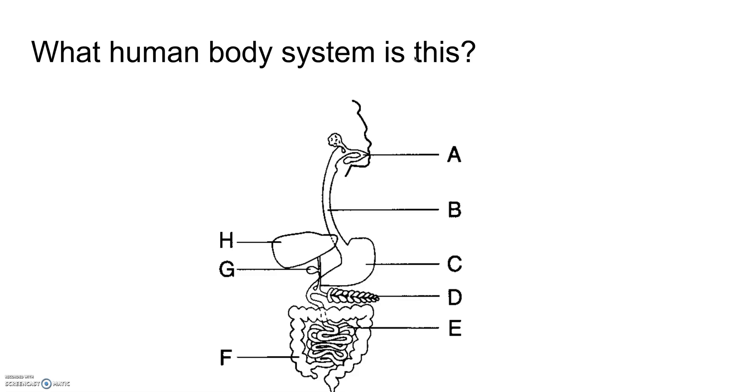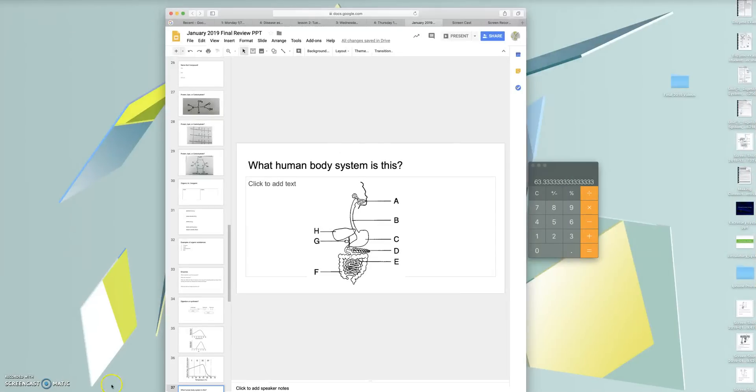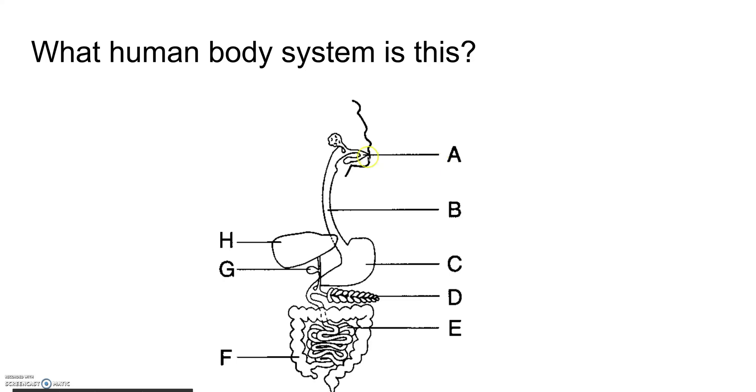Human body system. So this particular human body system is the digestive system and we know now that the digestive system breaks down food molecules so that it can be absorbed in the small intestine. Here we have the mouth, we have the salivary glands, the tongue, the teeth that mechanically and chemically break down the food. Here we have the pancreas that produces the hormone called insulin.